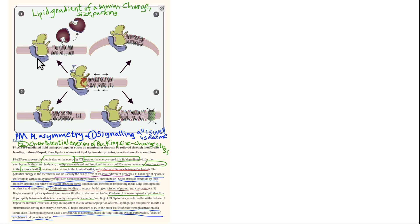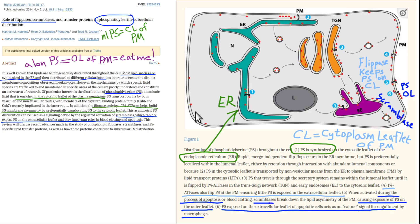You need the ATP enzyme — flippase and floppase — to be pumping your phosphatidylserine to the inner membrane and your phosphatidylcholine to the outer membrane. The point is the incredible intelligence of the cell that it sets up these intentional lipid gradients of charge, size, and asymmetry that can be used to change the shape of the cell. The phospholipids are made in the ER, the endoplasmic reticulum, and then lipid transport proteins ship them out to the plasma membrane.